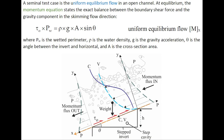A seminal test case is uniform equilibrium flow in an open channel. At equilibrium, the momentum equation states the exact balance between the boundary shear force resisting the flow motion and the gravity force component in the streamwise flow direction, in which pw is the wetted perimeter and A is the flow cross-section area.